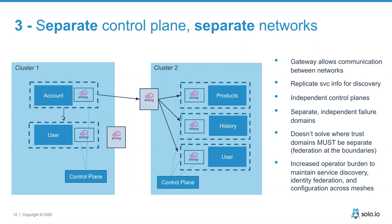With separate control planes, you need automation for service discovery and federation across isolated control planes, failover specification — specifying which cluster to fail over to and not cluster three or four which may be farther away or in different regions — and keeping routing and configuration concerns consistent in terms of multi-cluster operations throughout the life of the architecture.